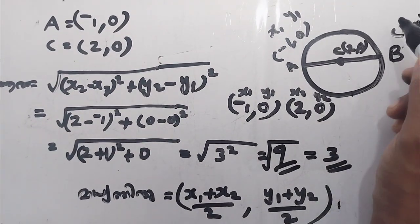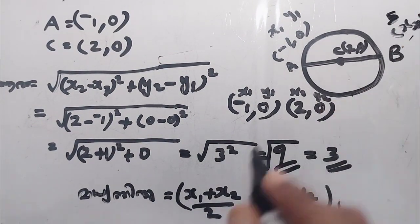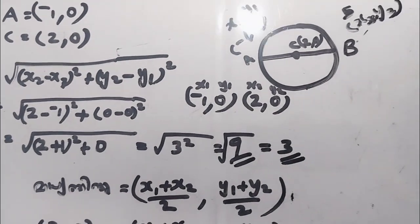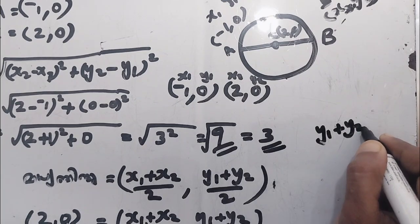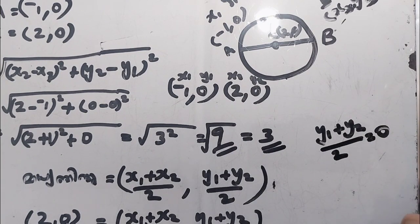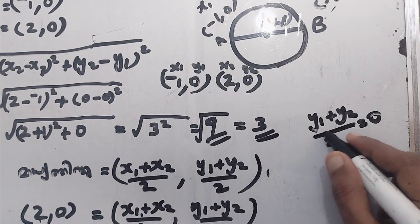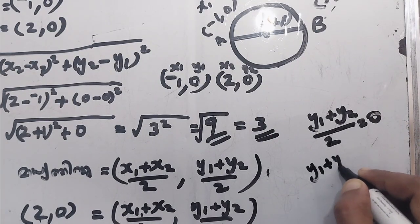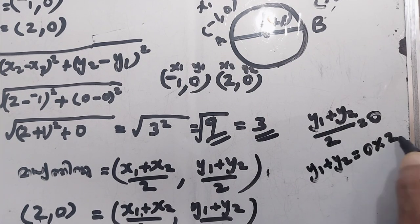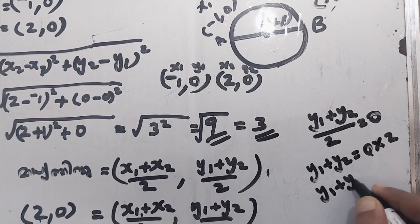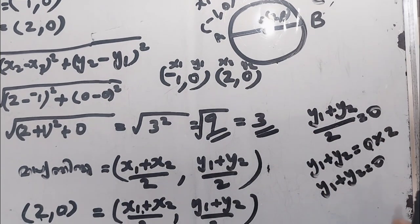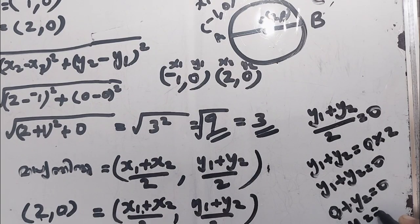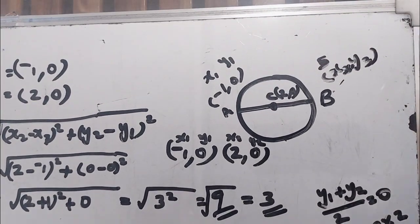What is x2? Now let's get y2. Let's get y1 plus y2. This is y1 plus y2. We can make y1 plus y2 sum to 0. Y1 plus y2 — that's y2. The y1 is 0. The y2 is 0.